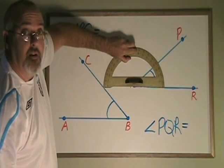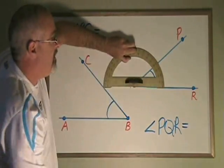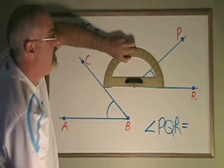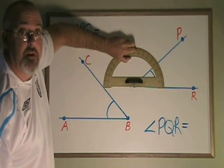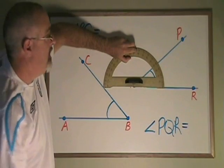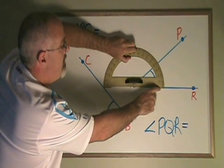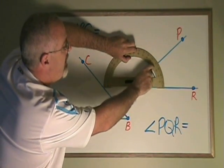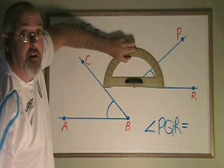Because we are measuring an angle that opens to the right, we have to use the inner set of numbers, since we always measure angles by counting up from zero. The inner set of numbers starts at zero. If I count up, I can see that this angle is about 39 degrees.